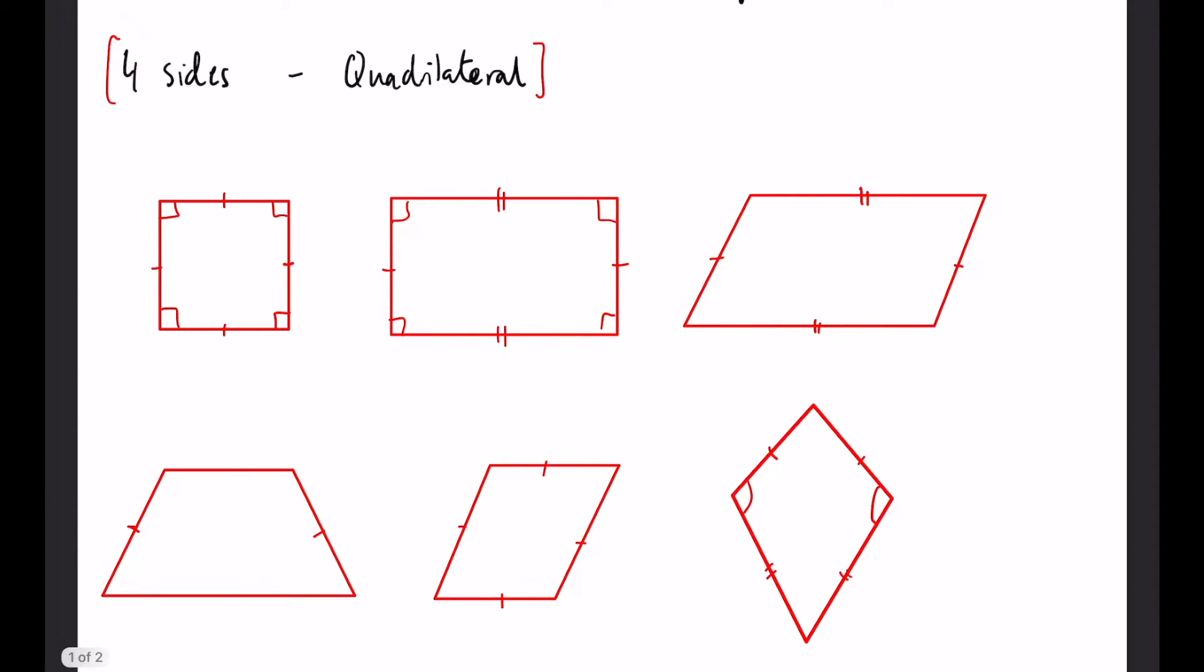Next we have the quadrilaterals, the four-sided shapes. Now we have kind of an elongated square known as a rectangle and then when you take a rectangle and slant it on its side a little bit you have something called a parallelogram.